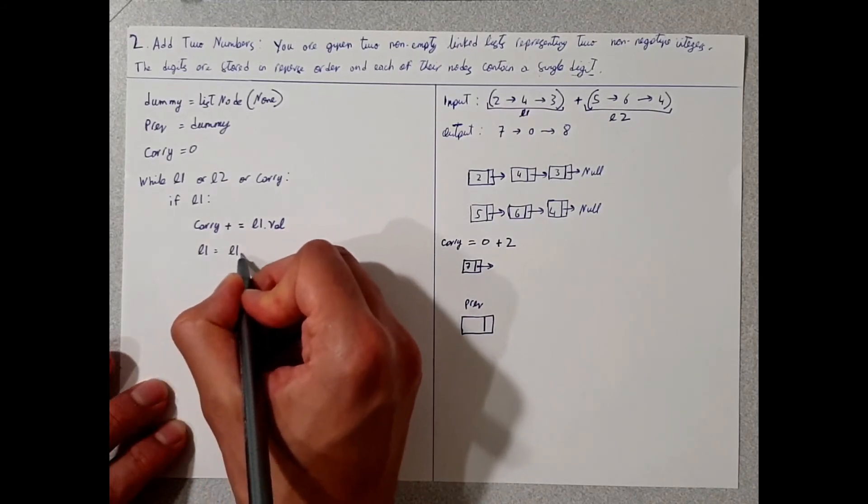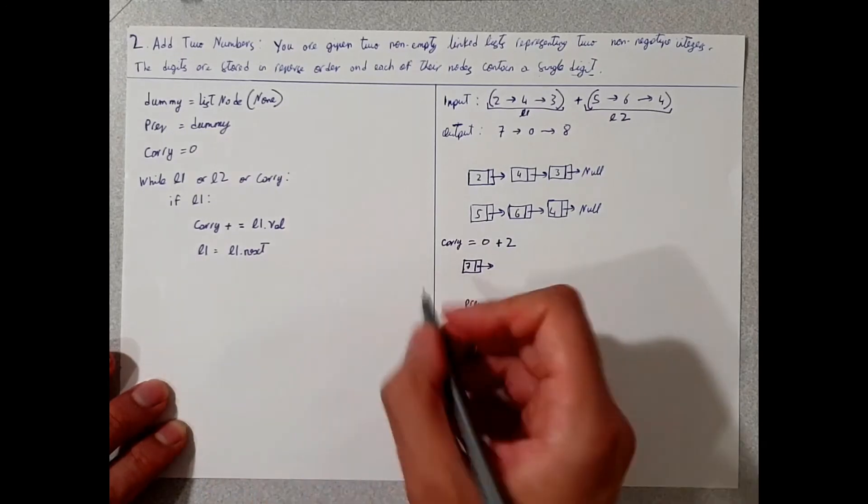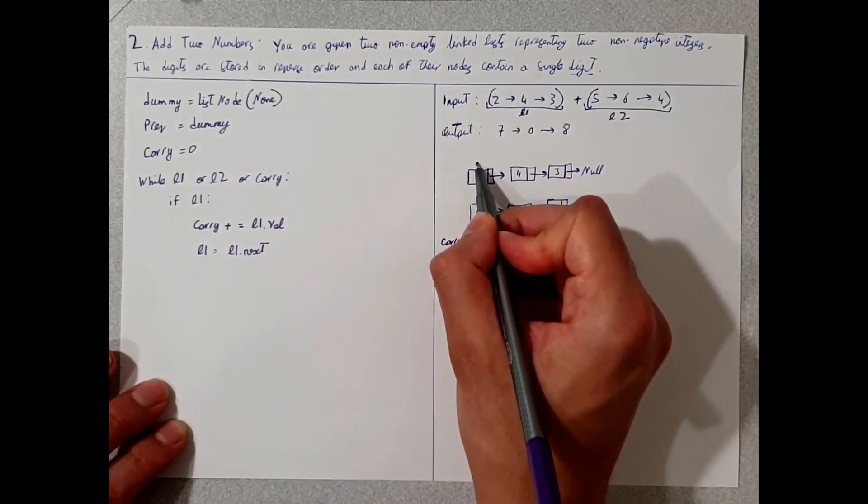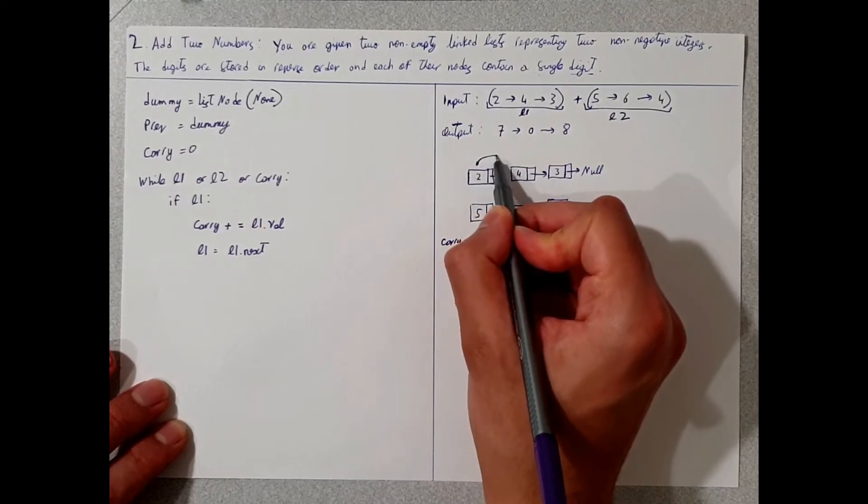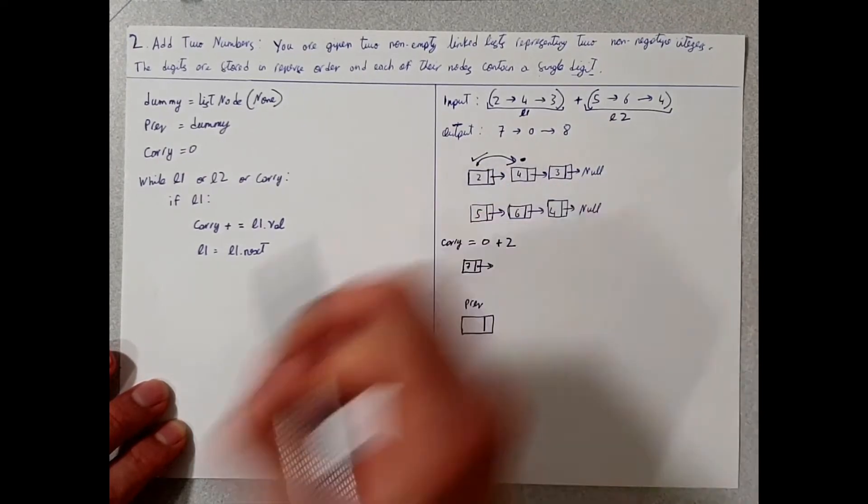And we will point L1 to L1 next. This is the way we iterate in linked lists, is that we have to shift L1 to L1 next. So L1 was here, now we're saying L1 point to L1 next, so now L1 next is here. So now we have this value in carry.